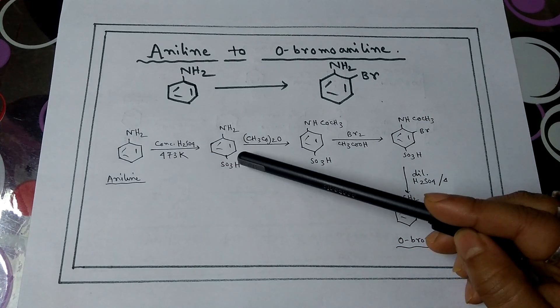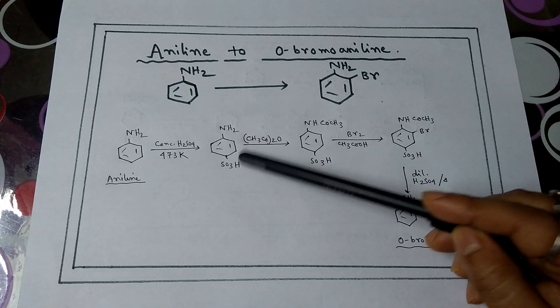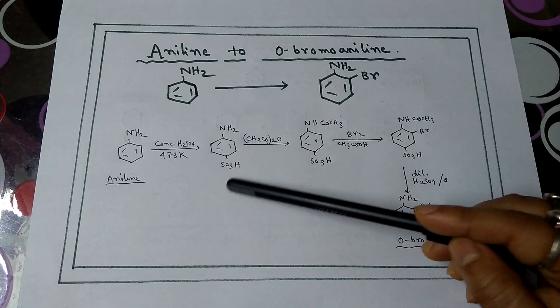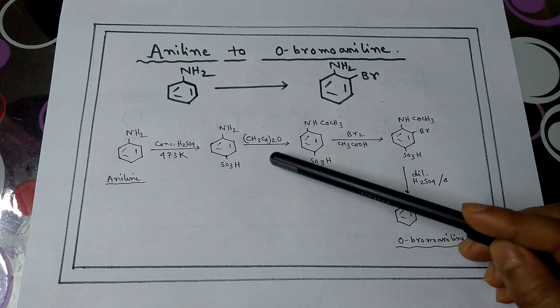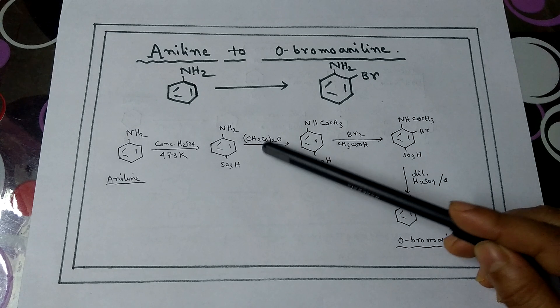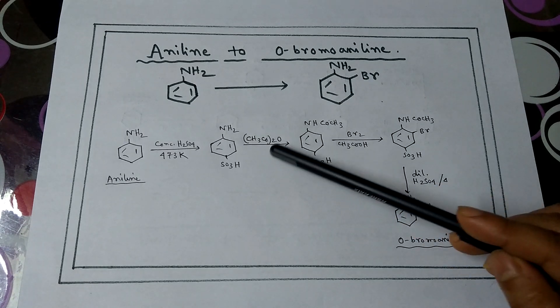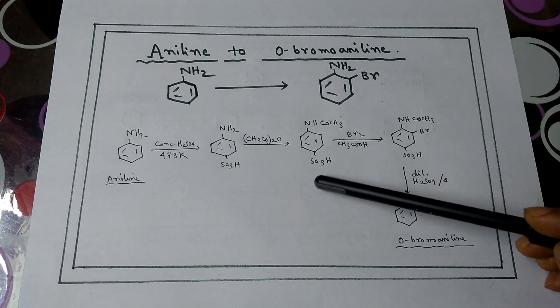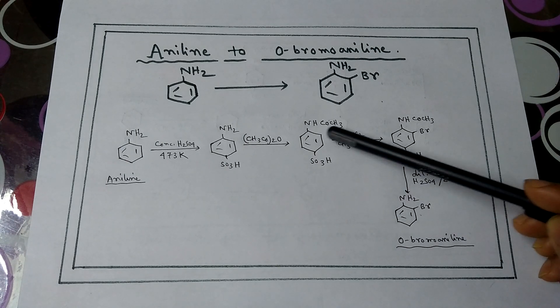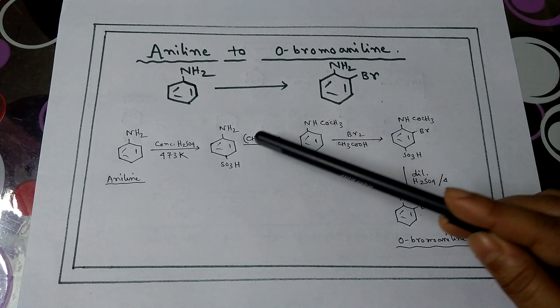The SO3H group enters the para position, forming NH2-SO3H. Then add CH3CO2O to block the NH2 group, forming benzene ring with SO3H and NHCOCH3 blocking group.